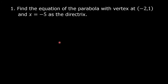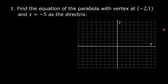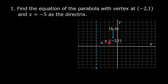Example number 1: Find the equation of the parabola with vertex at point (-2, 1) and x = -5 as the directrix. Plot the point (-2, 1) and graph x = -5 on the coordinate plane. The vertex has coordinates (-2, 1), so h = -2 and k = 1. The directrix gives h minus p = -5.